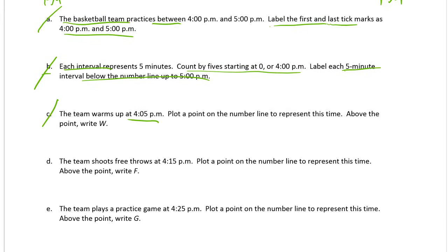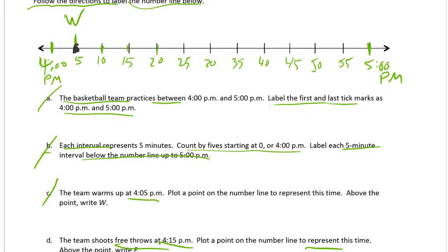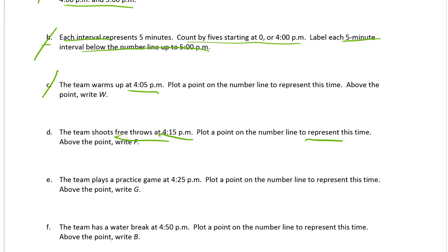D. The team shoots free throws at 4:15. Plot a point on the number line to represent this time. Represent just means show. So we're going to plot a point that shows on the number line what time this is. So 4:15 is going to be right here where the 15 is, because it's 4 o'clock and 15 minutes. And I label it with an F for free throws. And we're done with D.